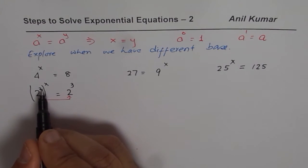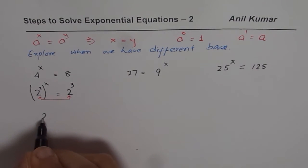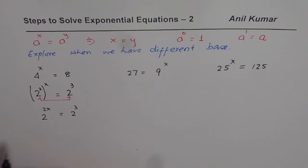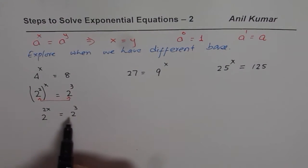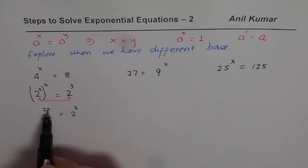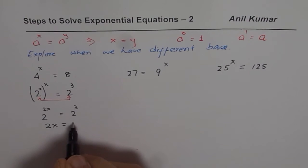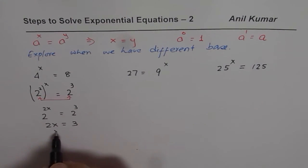So now, we will apply the power rule. So we get 2 to the power of 2x. Do you see that? Equals to 2 to the power of 3. Now that means, we have same base 2. Exponent 2x should be equals to 3. So we have 2x equals to 3. And we will solve for x as equals to 3 over 2. You get the idea.